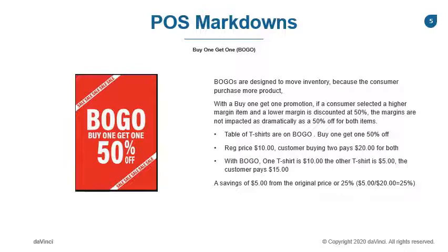With the buy one, get one promotion, if a consumer selects a higher margin item with a lower margin item, it is usually the lower margin item that is discounted. When blending both items together, the margins are not impacted as drastically as what they would be if it was a blanket 50% off all items.